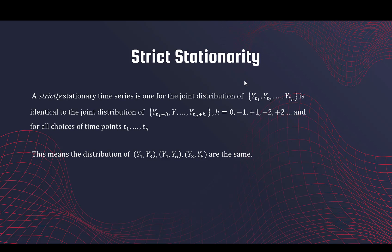We start with strict stationarity. If a time series y is strictly stationary, then if we take the series at n time points — yt1, yt2 through ytn — and we take another set of n variables where all time points are shifted by the same constant h, so it's yt1+h, yt2+h, and so on till ytn+h, these two sets will have the same joint distribution.